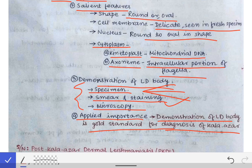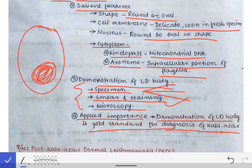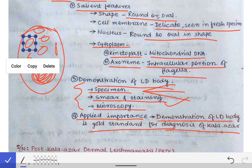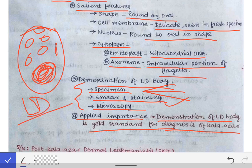Also remember to make the diagram of the LD body. Here is a rough diagram: a macrophage with its nucleus, and inside it several amastigotes — each amastigote containing a nucleus and a kinetoplast. For a detailed diagram, refer to my previous video on visceral leishmaniasis.